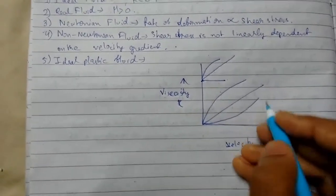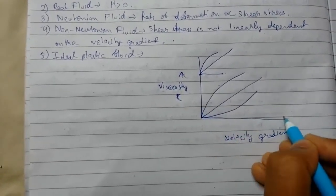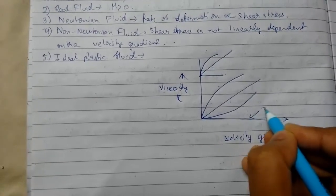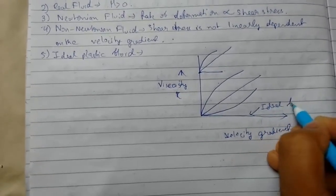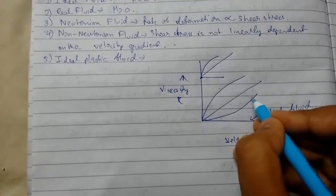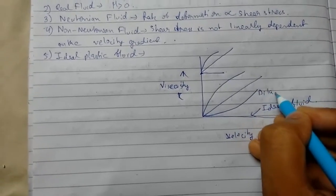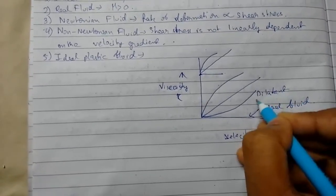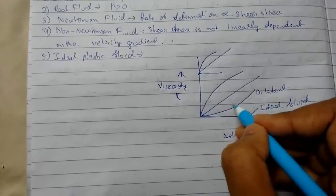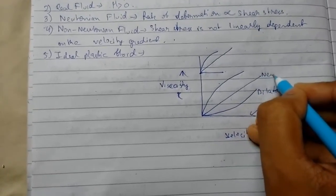This is known as the rheology curve. Rheology is the study of response of materials to stress, so how the materials react upon stress. So this is ideal fluid, this is dilatant, and this is Newtonian fluid.